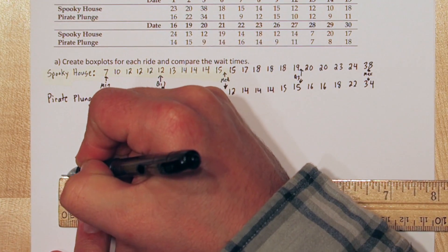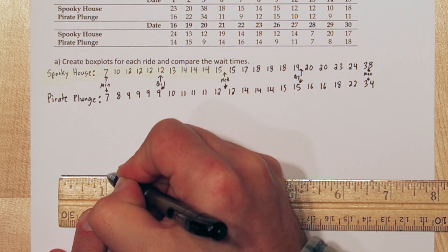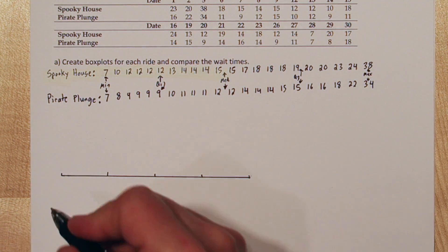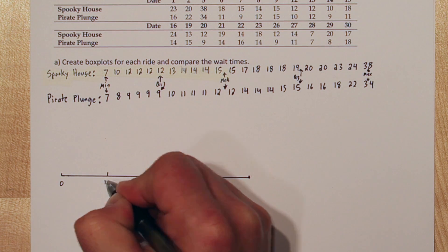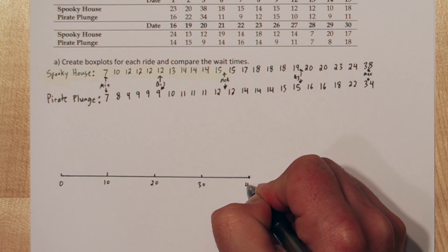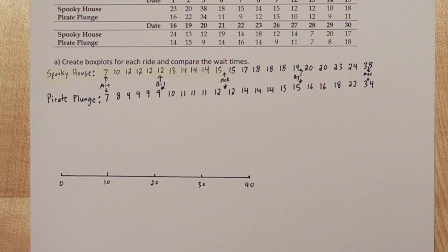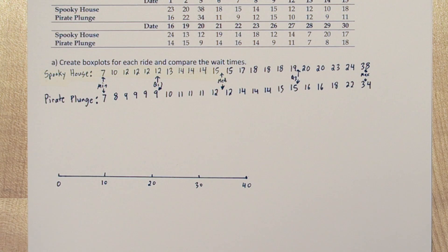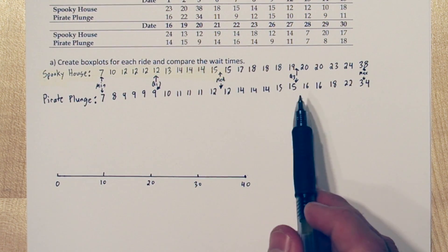For Pirate Plunge, our five number summary is the minimum, quartile 1, median, quartile 3, and the maximum, so 7, 9, 12, 15, and 34. Start by drawing small vertical lines at the quartile 1, median, and quartile 3 values, so 9, 12, and 15.